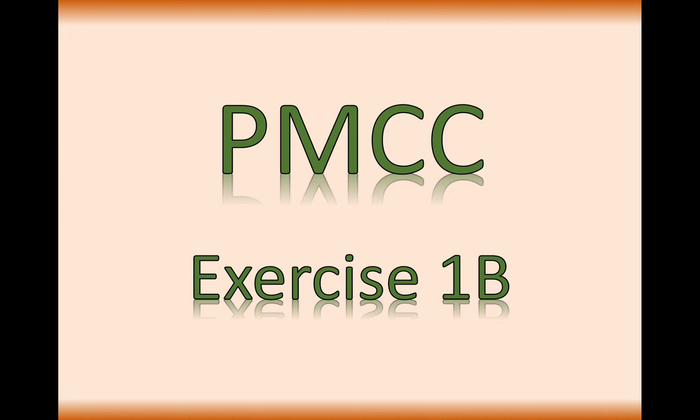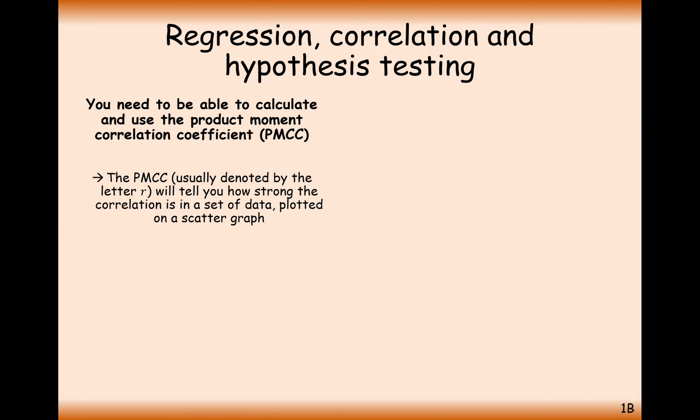PMCC stands for Product Moment Correlation Coefficient. It's basically a measurement of how perfectly correlated a set of data is. A set of data that looks like this where it's perfectly in line and a line of best fit will go straight through all of the coordinates exactly will have a product moment correlation coefficient of 1 exactly. And the letter we use for PMCC is the letter R. So here R is equal to 1.